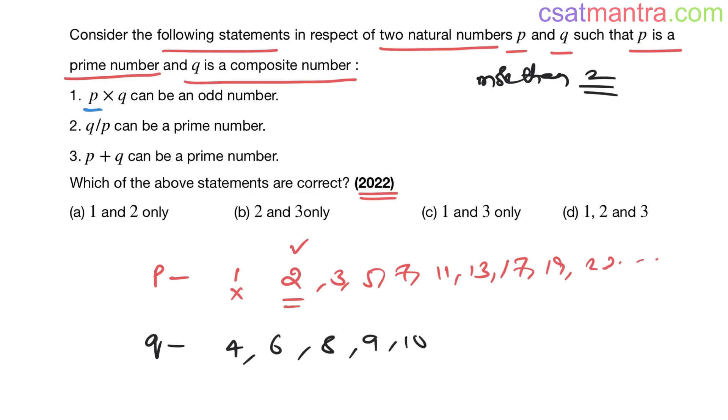Now, p into q can be an odd number. So p should be odd and q should be odd. Is there any such combination? P you take three, q you take nine. Three into nine equals twenty-seven. So yes, p into q can be an odd number. There is a possibility. Statement one is true.